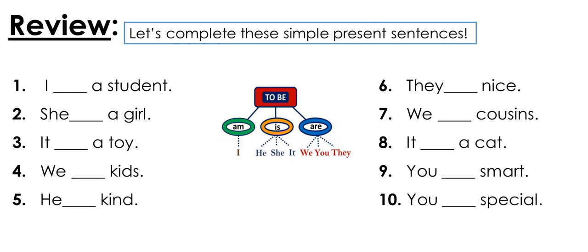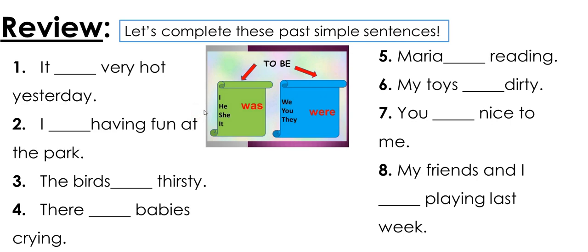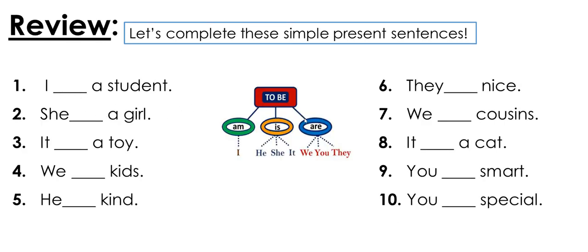Let's now focus on the simple present sentences. When do we use am, is, or are? I use 'am' with the pronoun I — if I'm talking about myself I would say 'I am.' If I have the pronouns he, she, or it, I use 'is.' If I have we, you, or they, I use 'are.' Let's have some practice: I — what am I going to use? 'I am a student.' Not 'I is a student' — it's 'I am a student.'